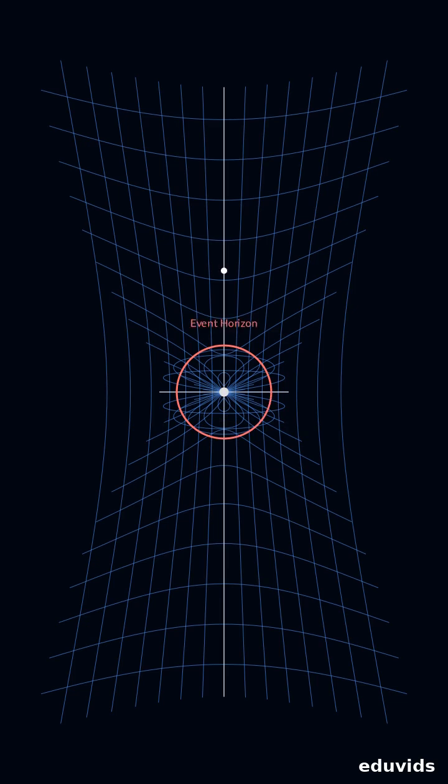Cross this invisible shell and the outward speed needed to escape beats light speed, so nothing exits. Outside the horizon, a skimming laser beam bends like a marble rolling along the curved grid, producing warped starlight we can photograph.